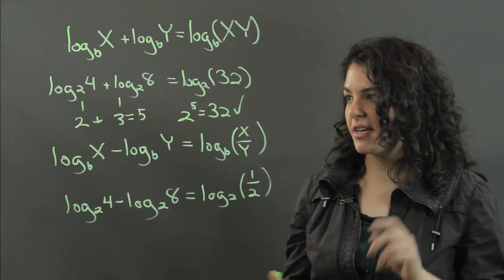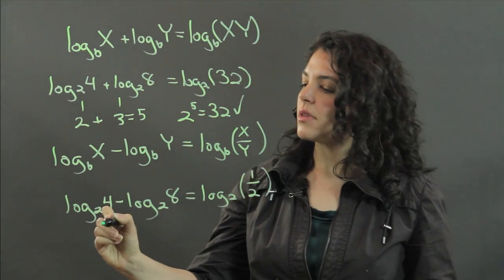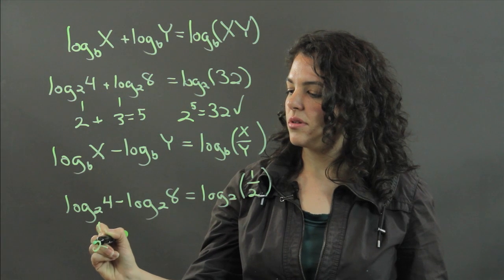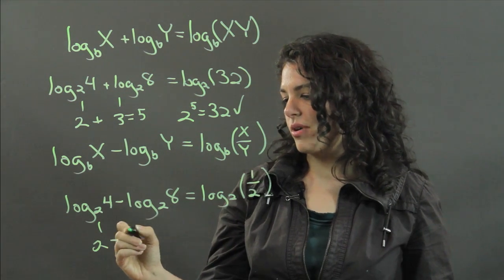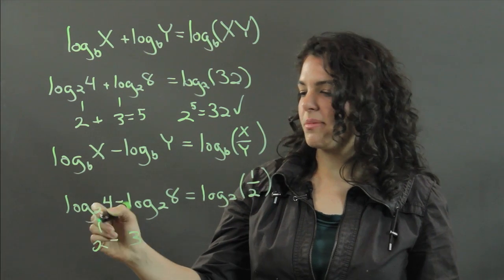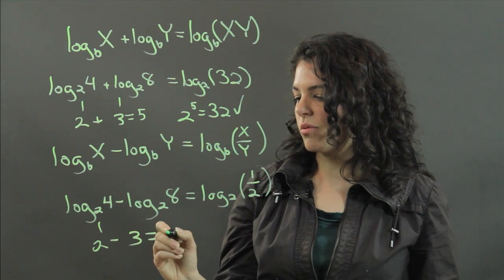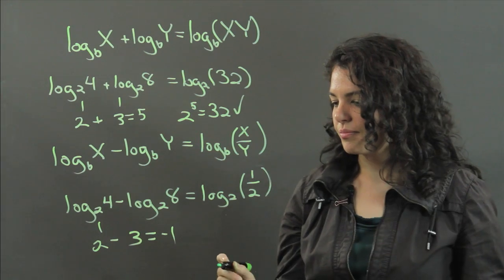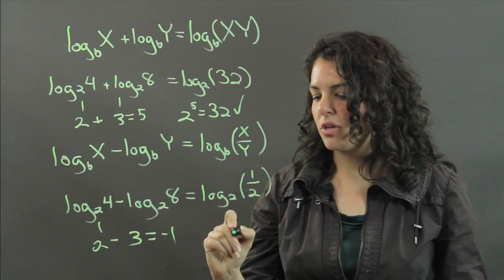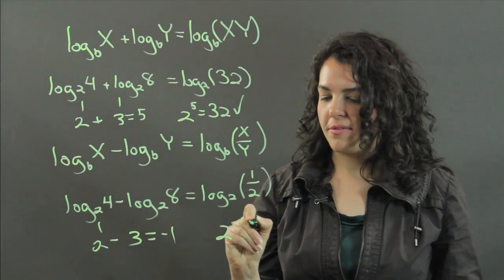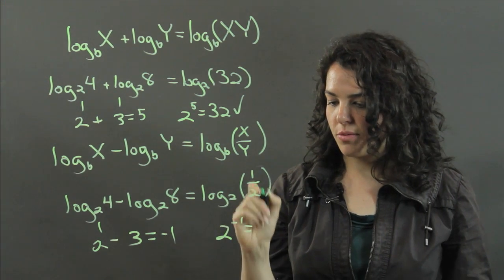And let's check that out the way we did these. If we have 2 minus 3, because log base 2 of 4 is 2 and log base 2 of 8 is 3, that equals negative 1. And we look at this, 2 raised to the power of negative 1 does equal 1 half.